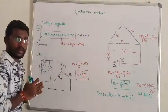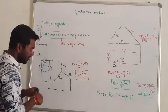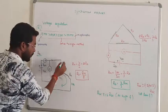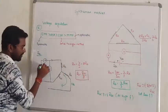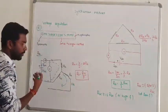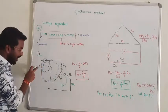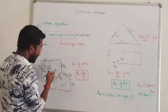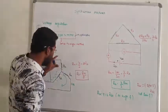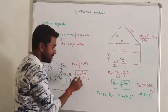If we connect with the star connection and supply DC, we will be able to measure the resistance. Because line to line, we have twice R_A. So if we connect across two terminals, the measured value will be 2 times the armature resistance.